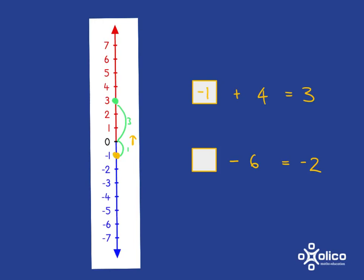Okay, try this one for yourself, and then we will go over it. Alright, so you knew that your ending point needed to be at negative 2, and you've come down 6 steps to end up at negative 2.